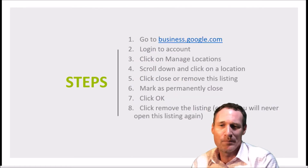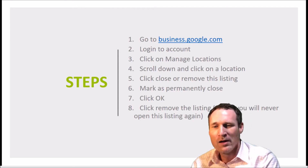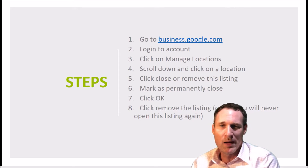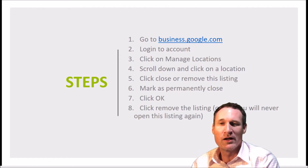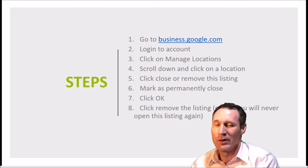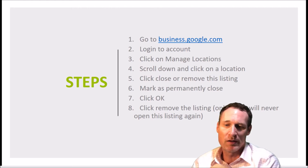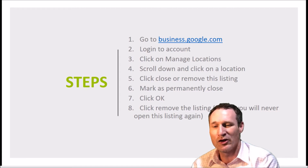The first step is to go to business.google.com, log in, and then click on Manage Locations. Scroll down and click on a location. Then click 'Close or Remove This Listing,' mark it as permanently closed, click OK, and then click 'Remove This Listing.'